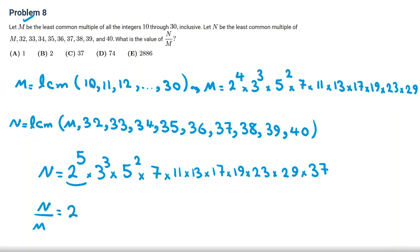Again, we consider the powers. 2 here to the 5 over 2 to the 4. It will be 2 to the 1. 3 will be cancelled. 5 squared will be cancelled. All these numbers will be cancelled. 37 will be left. So it will be 2 times 37, which will be 74, and the answer is D.